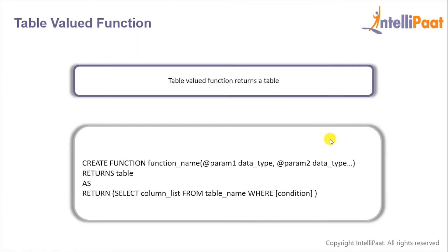Then we have table valued functions. These return a table instead of a scalar value. This is the syntax for a table valued function: the return type is TABLE, so after the RETURNS keyword we type TABLE. After that we use the AS RETURN keywords followed by a SELECT statement. Note that there are no BEGIN and END keywords for the table valued function.